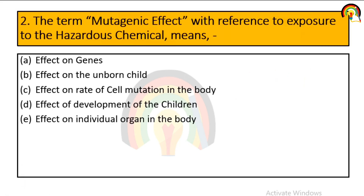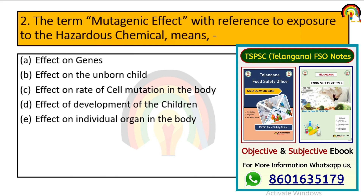The term mutagenic effect with reference to exposure to hazardous chemicals means: effect on gene, effect on unborn child, effect on rate of cell mutation, effect on development of children, or effect on individual organ in the body? The mutagenic effect with reference to hazardous chemicals means effect on gene.